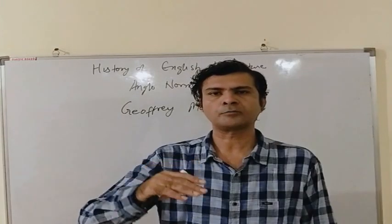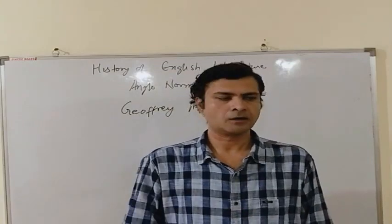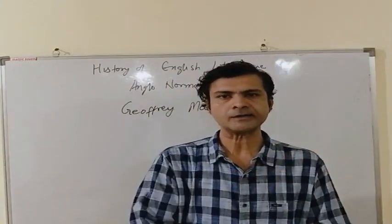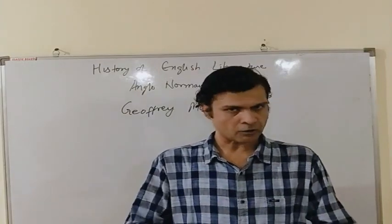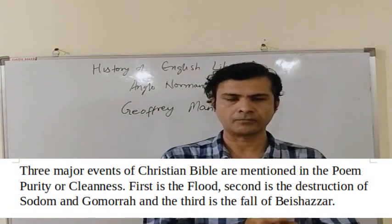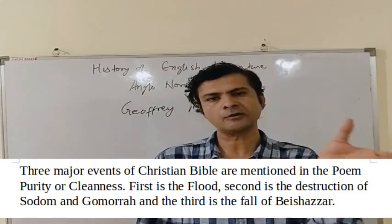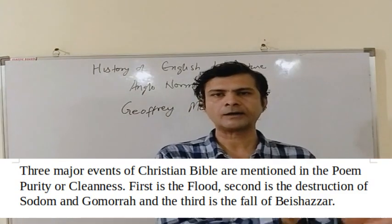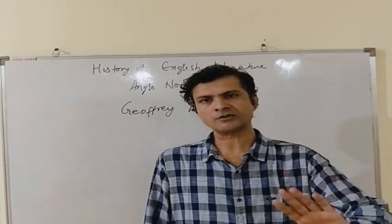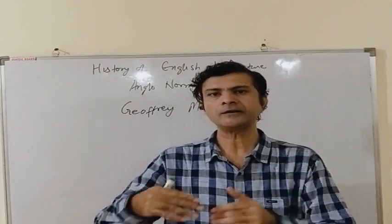The fourth poem of the Pearl poet is Purity, also known as Cleanness. Purity describes the importance of bodily cleanness and the joys of married life. Three major events of the Bible are discussed in this poem: first, the flood; second, the destruction of Sodom and Gomorrah; and third, the fall of Belshazzar. The poet warns about the dangers of defilement and discusses the joy of cleanness and married life.